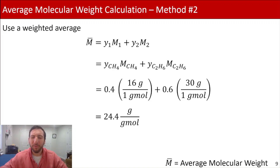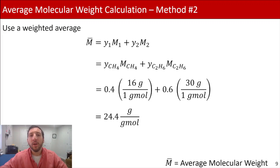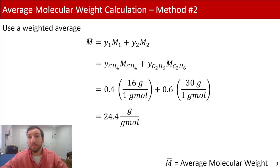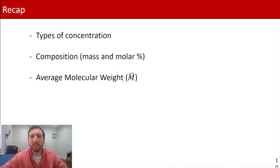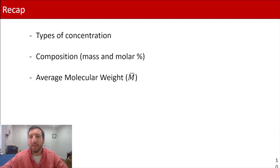Both methods give the same result. The reason I showed two methods is that depending on the values you are given, one calculation may be a lot more convenient than the other — so you have options. To recap: we talked about different types of concentration, composition using mass and mole percents, and a couple of ways to calculate average molecular weight. Thanks a lot for tuning in, and I'll see you in the next one.